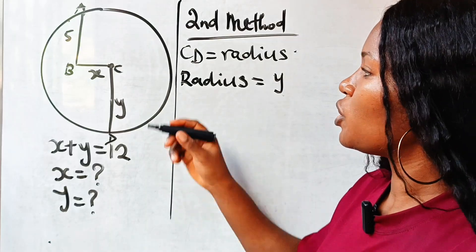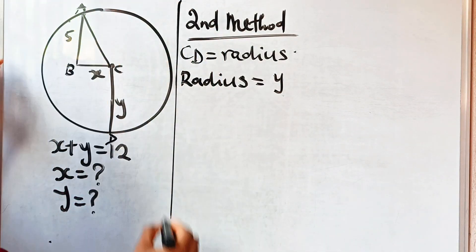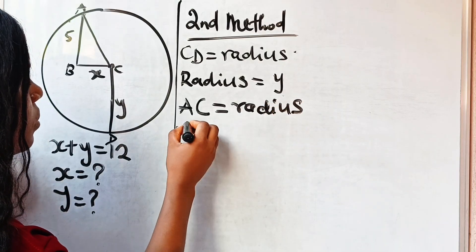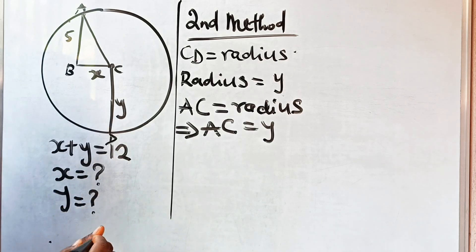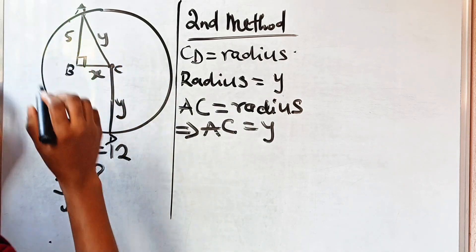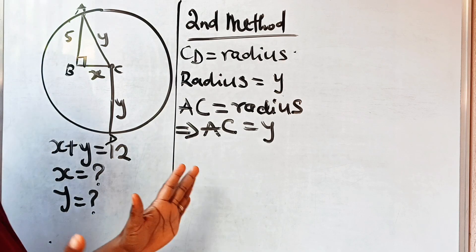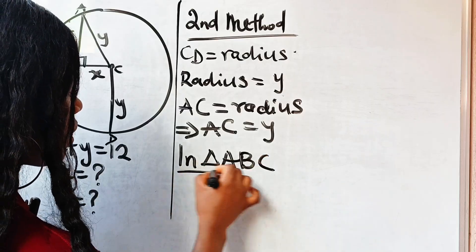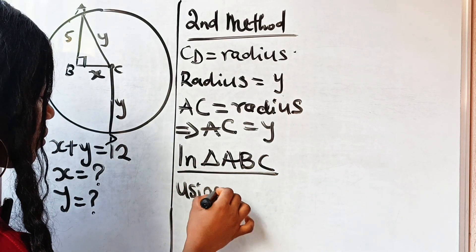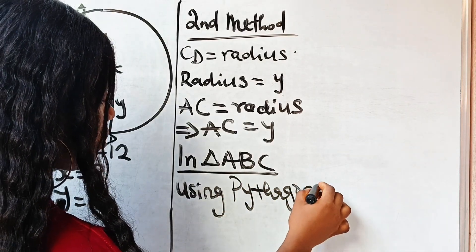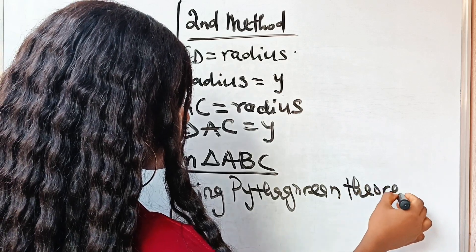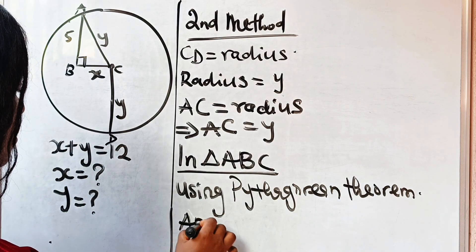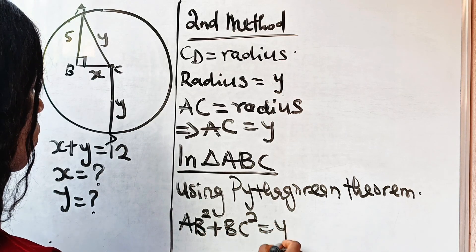Now, if we join A to C, AC is also the radius of the circle, so AC is also equal to y. This forms a right-angled triangle. In triangle ABC, using the Pythagorean theorem, we can write that AB squared plus BC squared is equal to y squared.